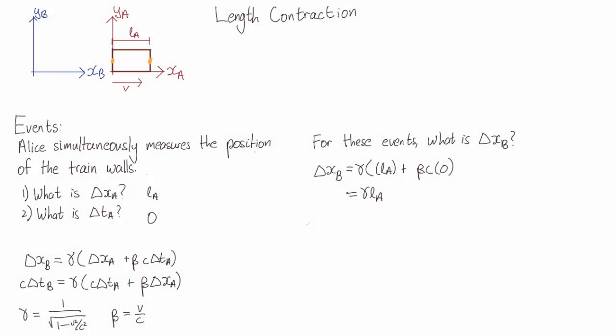So we took the events where Alice simultaneously measured the position of the train walls in her reference frame. But the problem is, just because the events are simultaneous in Alice's frame, doesn't mean they're simultaneous in Bob's frame.